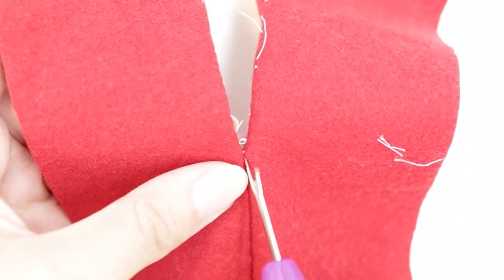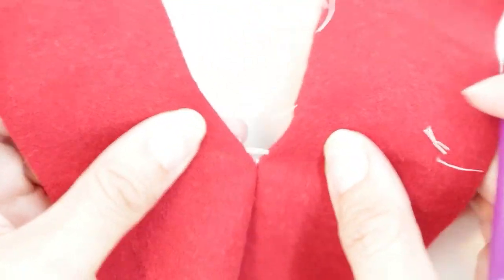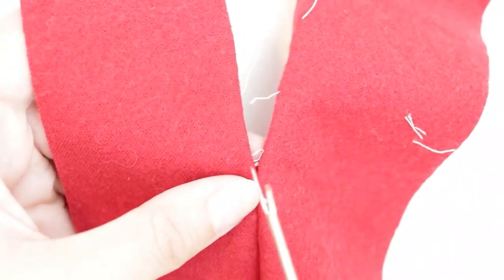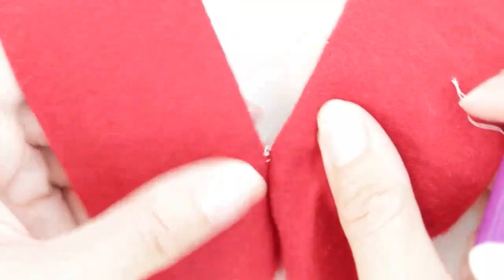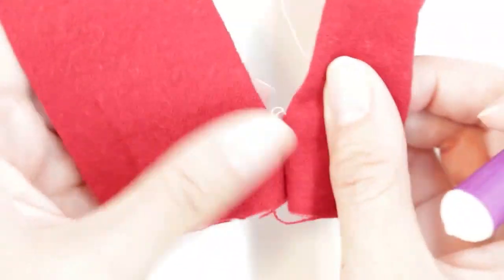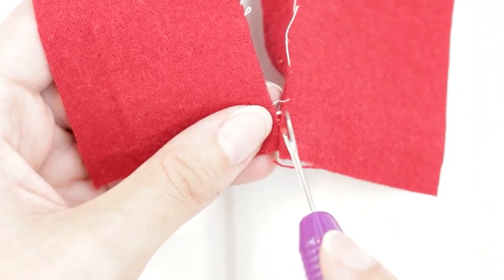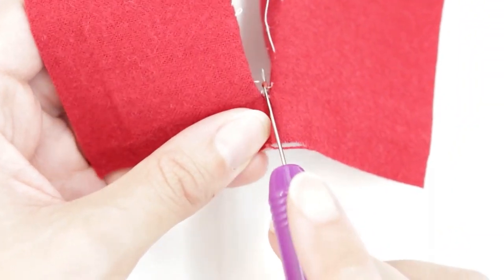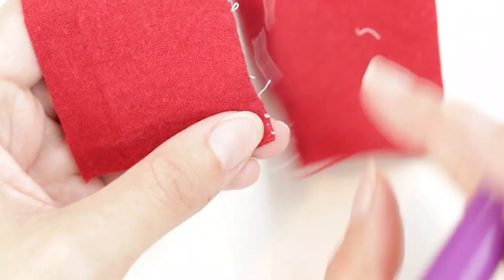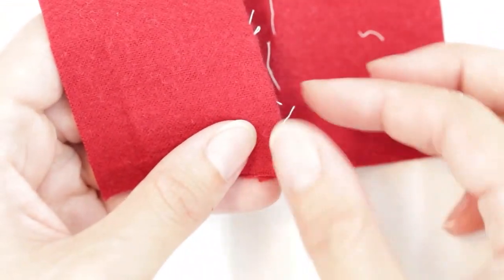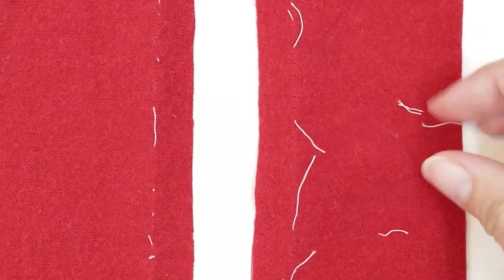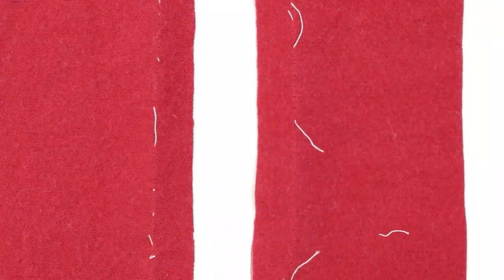I've had to use this method on multiple occasions when unpicking the other way was just too much of a challenge. With this method, you do have to be pretty careful in the backstitch section. Make sure you're only cutting through the thread and not your fabric. And then as before, remove your threads.